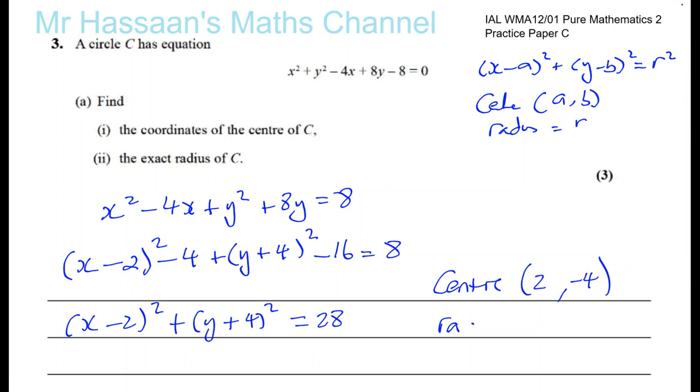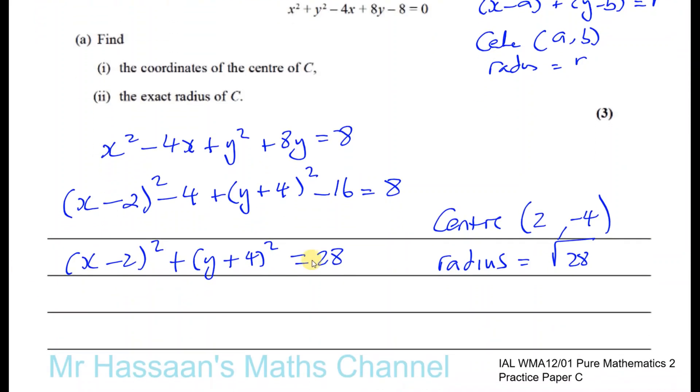The radius is going to be the square root of what's left on the other side, which is the square root of 28, which I'm going to give in its simplified surd form. What number goes into 28? 4 times 7 is 28, so this is going to be 2 root 7, because this is the same as root 4 times root 7. Root 4 times root 7 gives me 2 root 7.